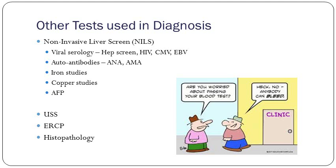Other tests used in diagnosis of liver disease: the non-invasive liver screen includes viral serology — a full hepatitis screen, HIV screen, cytomegalovirus screen, and EBV screen — plus a full set of autoantibodies, iron studies, copper studies, and AFP. You'd then get an ultrasound scan to rule out any post-hepatic causes of liver damage. Depending on what's found, you may request an ERCP, and potentially — though rarely — a liver biopsy.